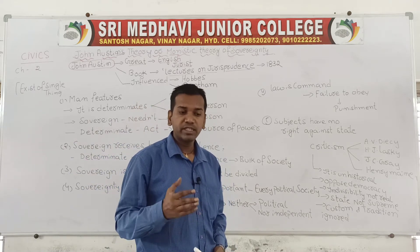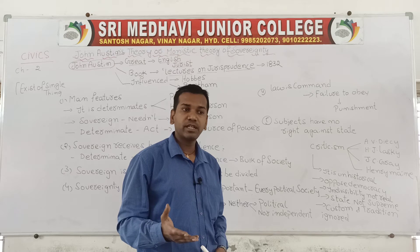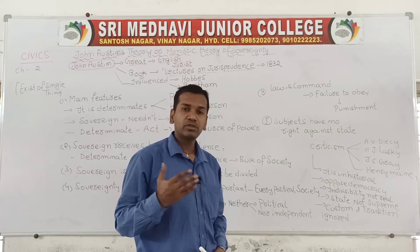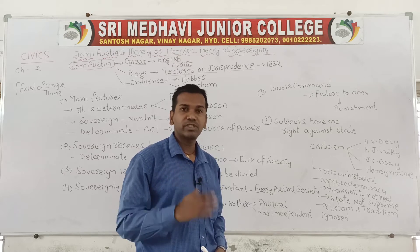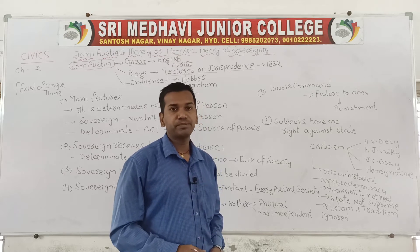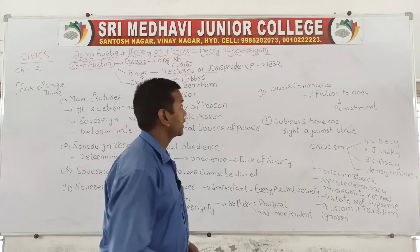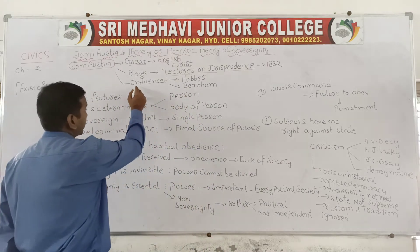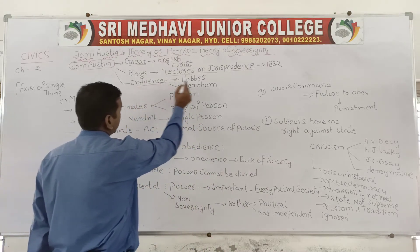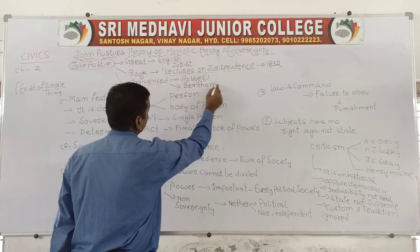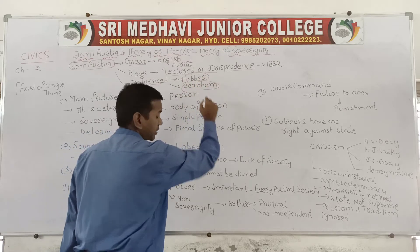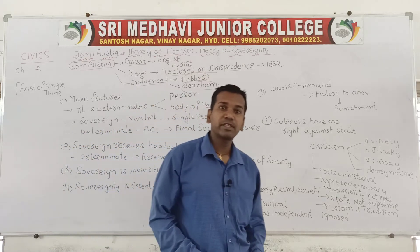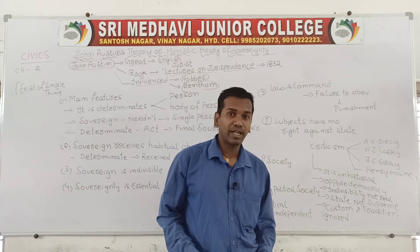John Austin greatly preferred that power should be under the control of the state and sovereignty should lie under the control of the state. His works were greatly influenced by Hobbes and Bentham, two great philosophers who greatly inspired the theory of John Austin.